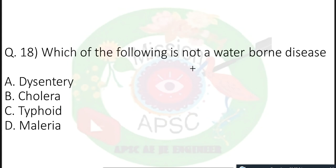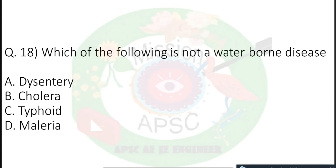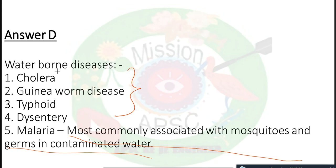Next: Which of the following is NOT a waterborne disease — dysentery, cholera, typhoid, or malaria? The correct answer is option D: malaria. Malaria is not a waterborne disease; it is most commonly associated with mosquitoes. Cholera, dysentery, and typhoid are mainly waterborne diseases.